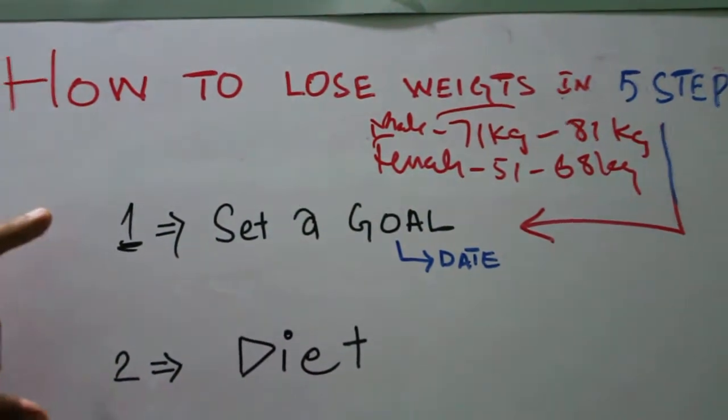Weight is determined by the combination of height as well. Now, to lose weight you have to do five important steps. The first step is: set a goal.